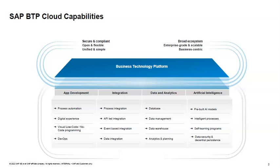For integration, we have process integration, a lot of APIs, API-led integration, and event-based integrations. We have data integrations and data analytics — including database, data management, data warehouse, analytics, and planning. In artificial intelligence, we have pre-built AI models, intelligent processes, self-learning programs, data security, decentral prep, and persistence.